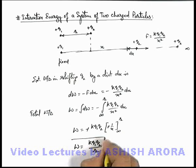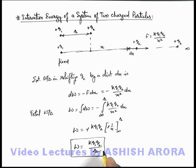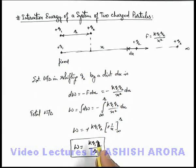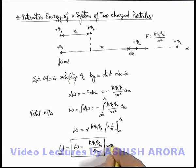This is the total external work done in bringing the charge q2 from infinity to a location at a distance r from the charge q1. This work done can be written as interaction energy, which is denoted by the symbol U. It is the interaction energy of the system of two charged particles separated by a distance r.